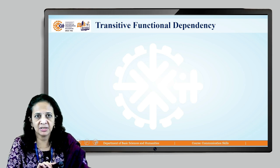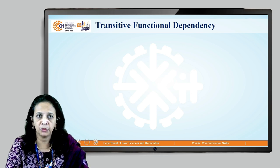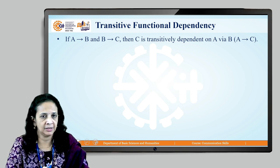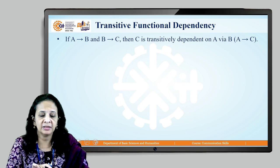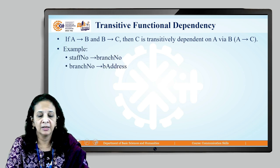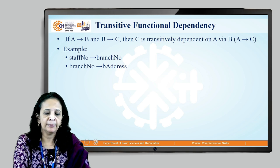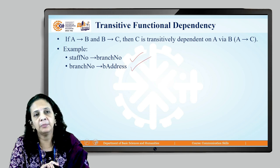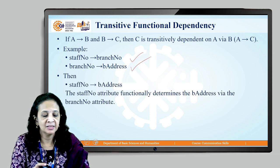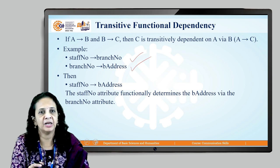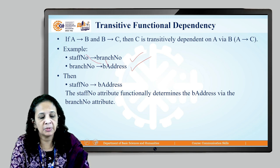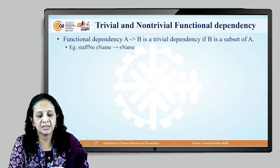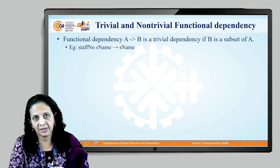There are additional types of functional dependencies. In transitive functional dependency, if A → B and B → C, then C transitively depends on A via B. For example, staff number → branch number and branch number → address implies staff number → branch address via branch number.